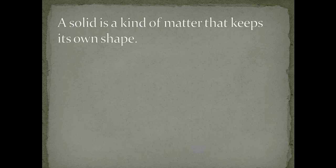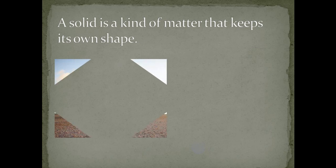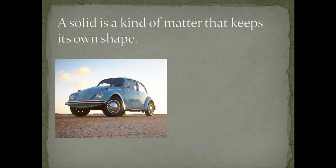A solid is a kind of matter that keeps its own shape. Look at this car — it's solid. Why did I say it is solid? Because it keeps its own shape. This means when the car is moving or when it is stopped in its place, its shape will not change. If you cover the car and then remove the cover, it will have the same shape, so it is solid.